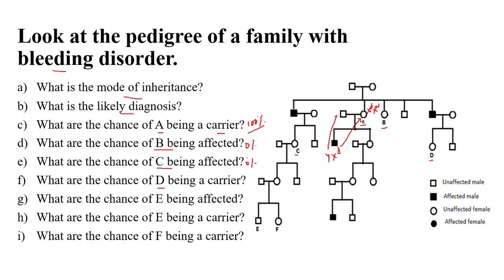What is the chance of D being a carrier? To calculate this, we start from the nearest affected person — her father. This father has Y and XD, so he transmits the X chromosome to all his daughters, and since it is defective, all of his daughters will be carriers. This daughter will have XD from her father and Xn from her mother, who has Xn and Xn. Therefore the chance of D being a carrier is 100%.